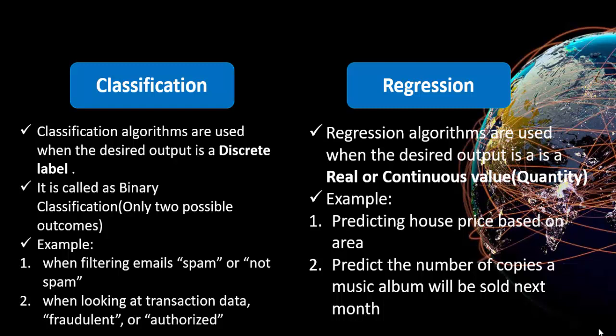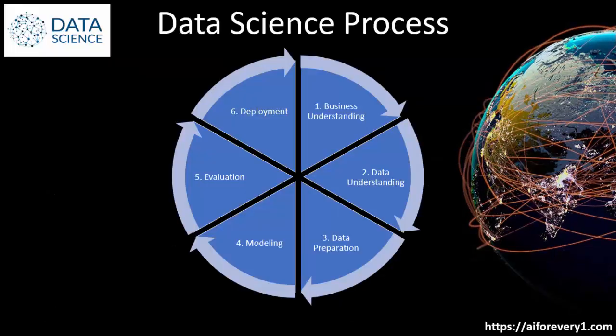We have completed the introduction. Now comes the core topic: the data science process. If you consider any data science project, almost 95% of them will fall under these six steps: business understanding, data understanding, data preparation, modeling, evaluation, and deployment. These are the six data science process steps.